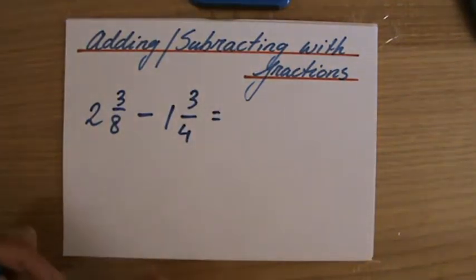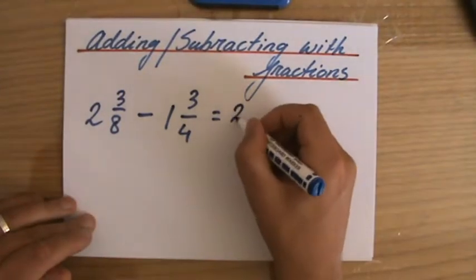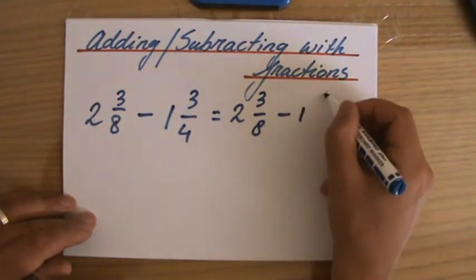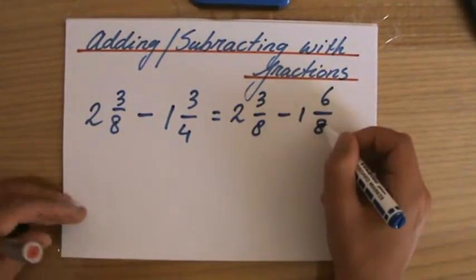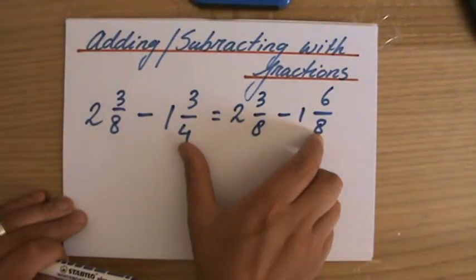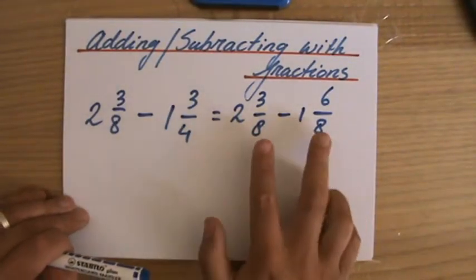Now I've given you two methods to approach these questions involving mixed numbers, and the first method was, well, just leave it as a mixed number. So 2 3/8 minus 1 6/8. Are you able to do it now? Can you find that the equivalent fraction, 3/4 is 6/8, because those denominators have to be the same.